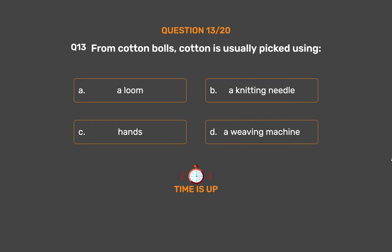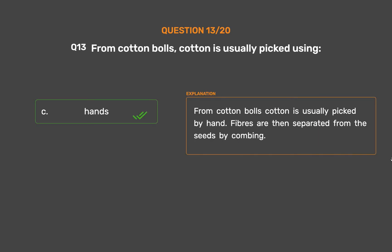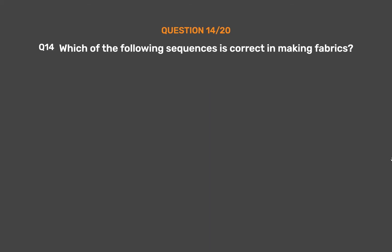The correct answer is Option C. From cotton bolls, cotton is usually picked by hand. Fibers are then separated from the seeds by combing.